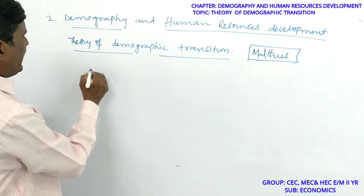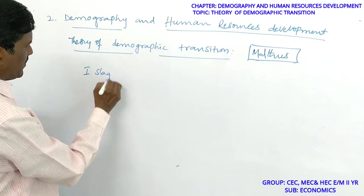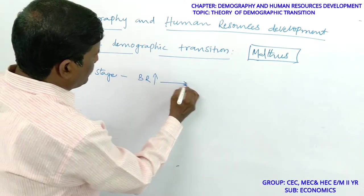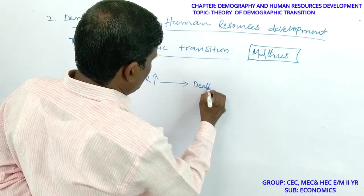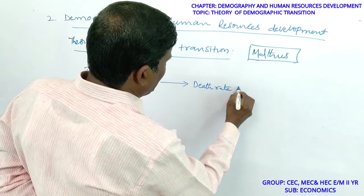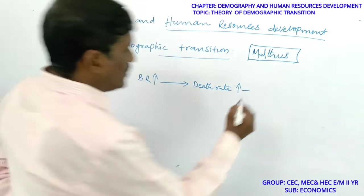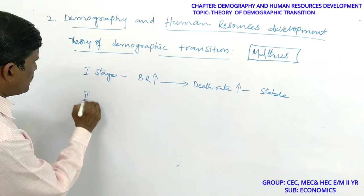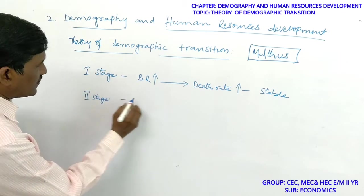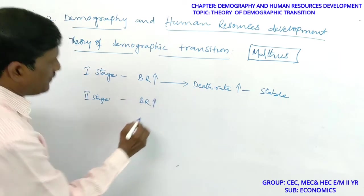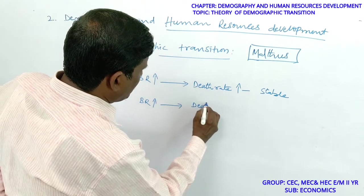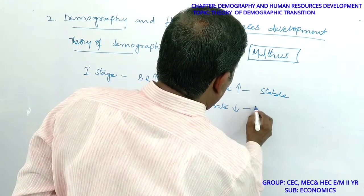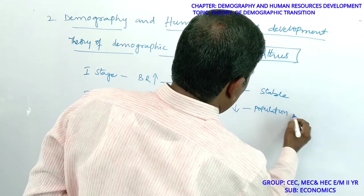In the first stage, birth rate is very high and death rate is also very high, so population is stable. In the second stage, birth rate is very high but death rate is low, leading to population explosion.